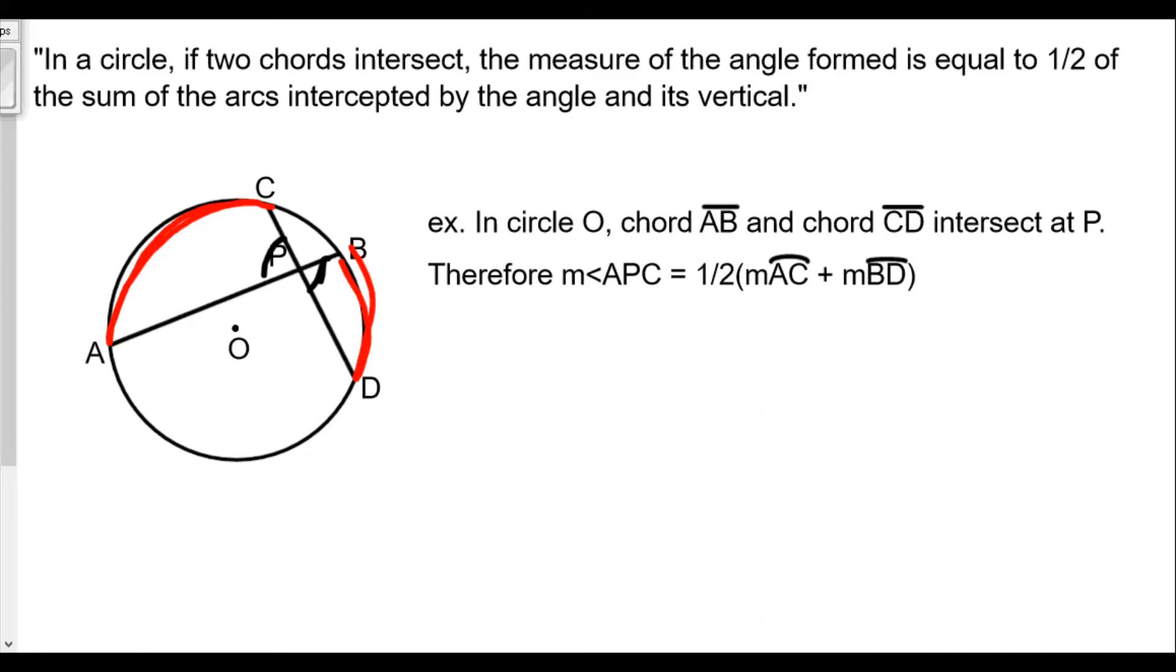In the example, we talk about angle APC and angle BPD which is vertical. We need to talk about the arcs intercepted by both angles, arc AC and BD. We take the sum of those arc measures together, divide by two, and that equals the measure of the angle.